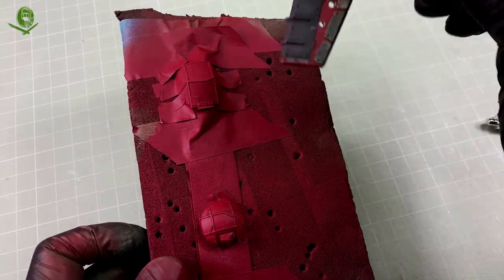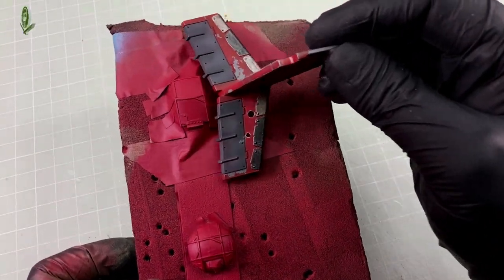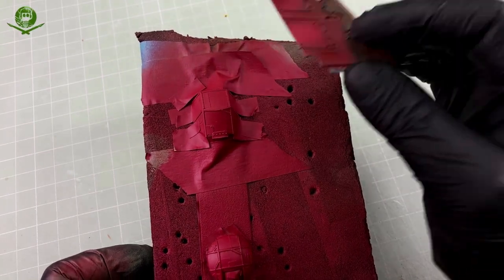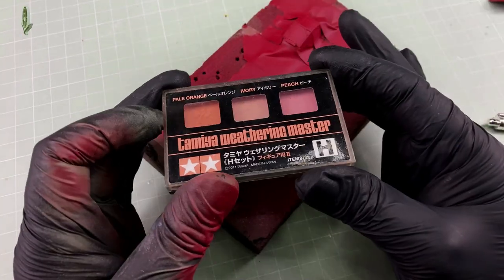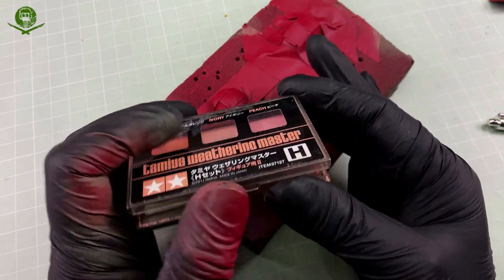Mephiston Red is ever so slightly different to the red I used on the fuselage, so whilst it was all still masked, I applied some pinkish Tamiya weathering pastel to break it up and fade it a little bit.